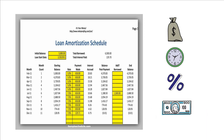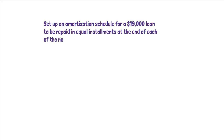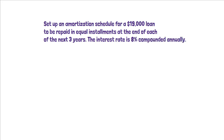Here is a simple numeric example. Set up an amortization schedule for a $19,000 loan to be repaid in equal installments at the end of each of the next three years. The interest rate is 8% compounded annually.